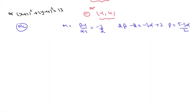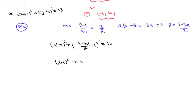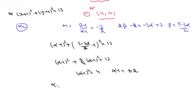We know the point (1,1) lies on the circle and the radius is root 13, so: (α − 1)² + (β − 1)² = 13. Substituting β = (5 − 3α)/2: (α − 1)² + ((3 − 3α)/2)² = 13, which gives (α − 1)² + (9/4)(α − 1)² = 13. So (α − 1)² = 4, meaning α − 1 = ±2, giving α = 3 or α = −1.